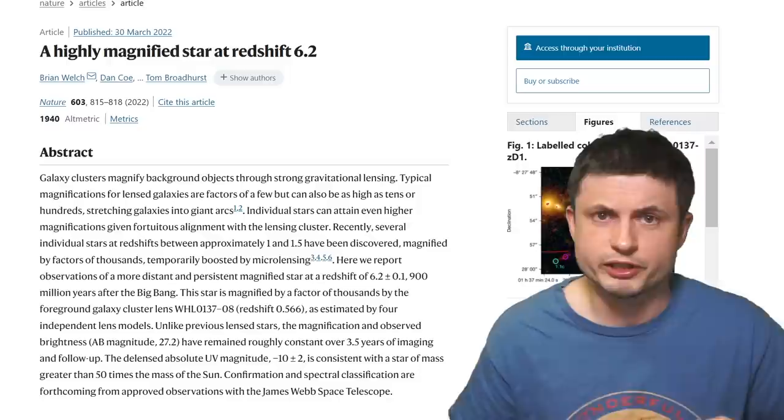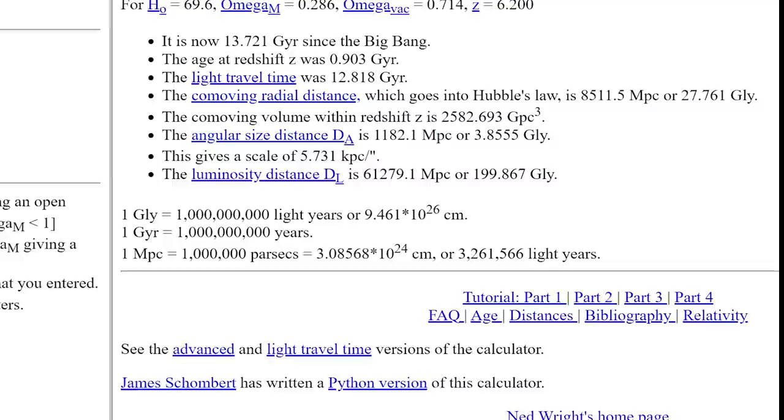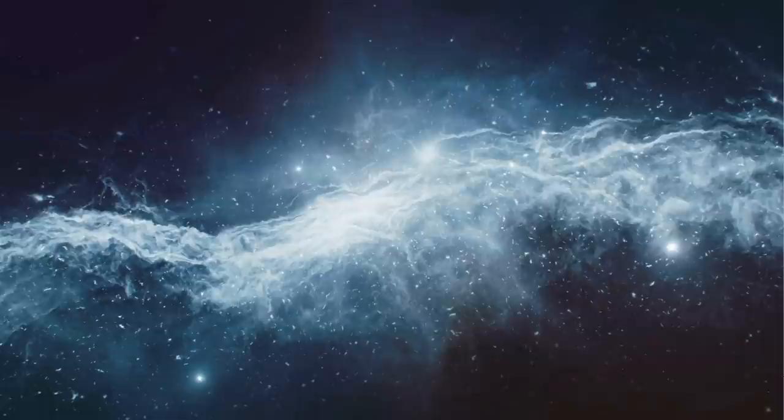With the calculations establishing its distance at the redshift of 6.2. Now, if you're not familiar with redshifts, there are quite a lot of calculators online that you can use the redshift to determine the distance to the star. And the one I usually use is the one from UCLA by Edward Wright, which shows the distance at 27.7 billion light years away from us, or very, very, very far away.